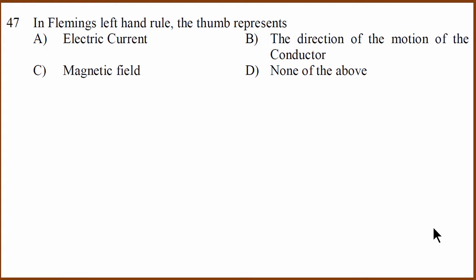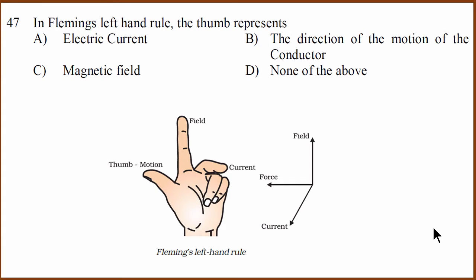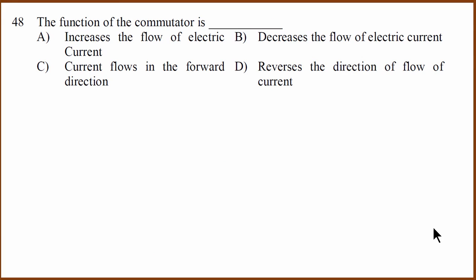So in the left hand rule, the thumb represents the direction of the motion of a conductor. Fleming's left hand rule tells us which direction the conductor will go. Next, the function of a commutator. Commutator helps in reversing the direction of the flow of the current. So that is the answer.